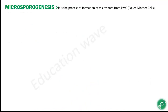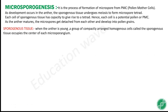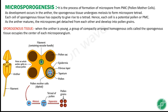Next is microsporogenesis. It is the process of formation of microspores from PMC — pollen mother cells. As development occurs in the anther, the sporogenous tissue undergoes meiosis to form microspore tetrads. Each cell of the sporogenous tissue has the capacity to give rise to a tetrad. Hence each cell is a potential pollen mother cell or PMC.